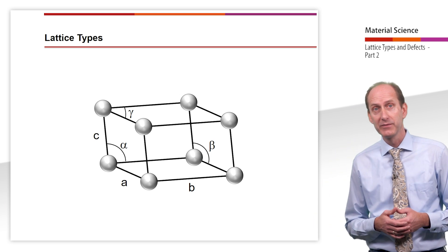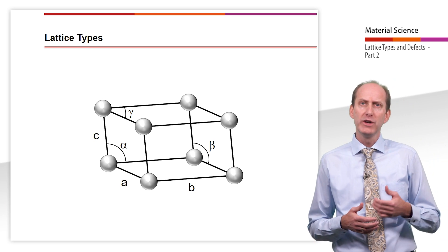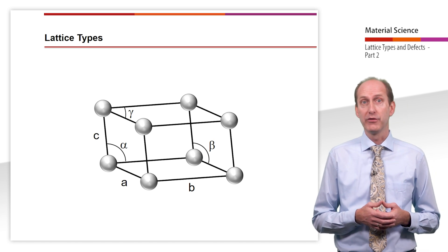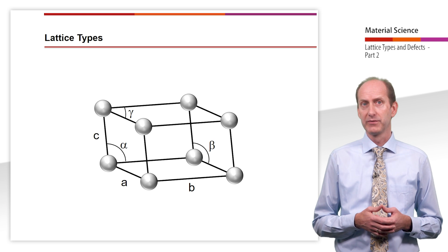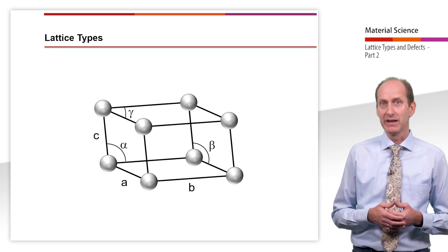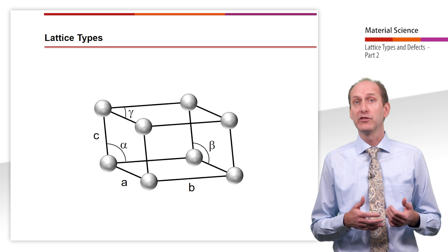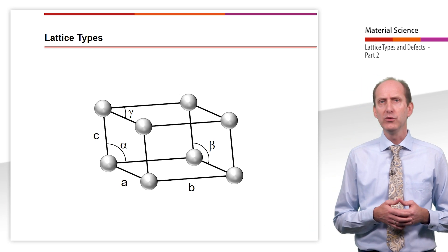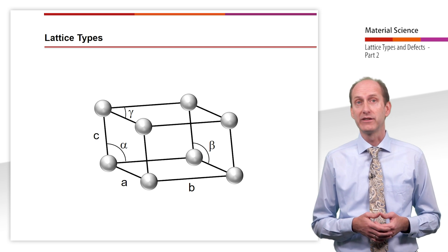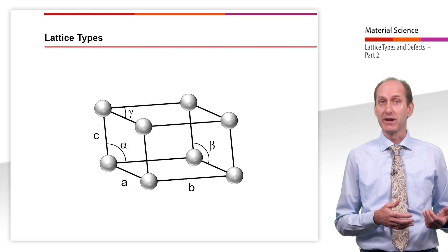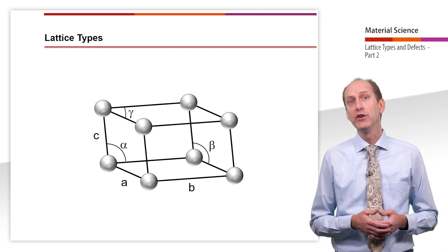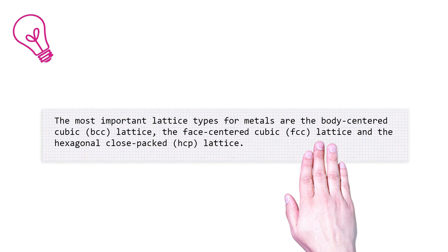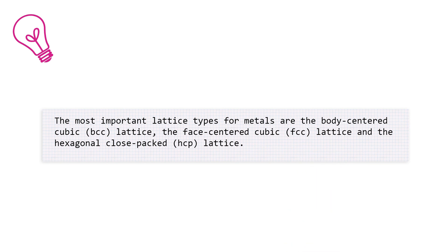The crystal lattices presented up to now, in which atoms are only located on the corners of the unit cell, are called primitive lattices. These are often found in ion lattices, but not in crystal lattices of metallic materials. Here the unit cells are characterized by additional atoms at the intersection of the plane diagonals or the body diagonals. The most important lattice types for metals are the body-centered cubic BCC lattice, the face-centered cubic FCC lattice and the hexagonal close-packed HCP lattice.